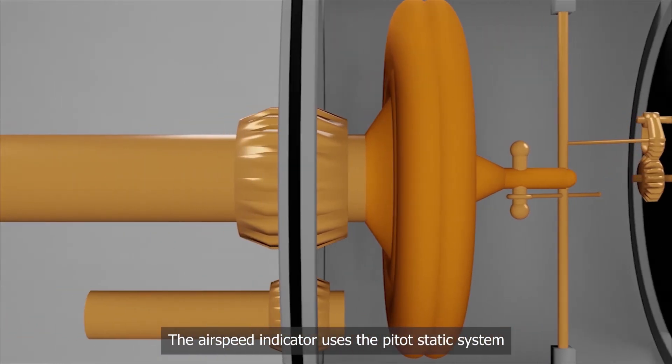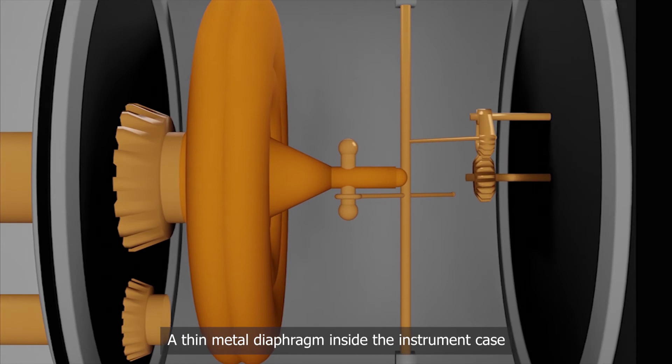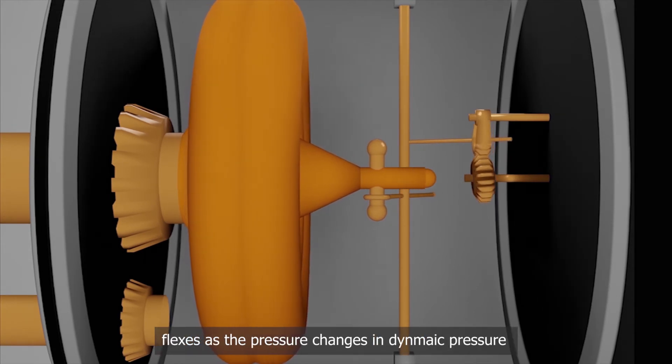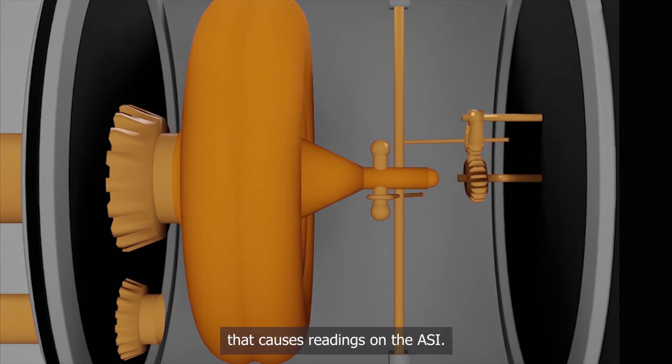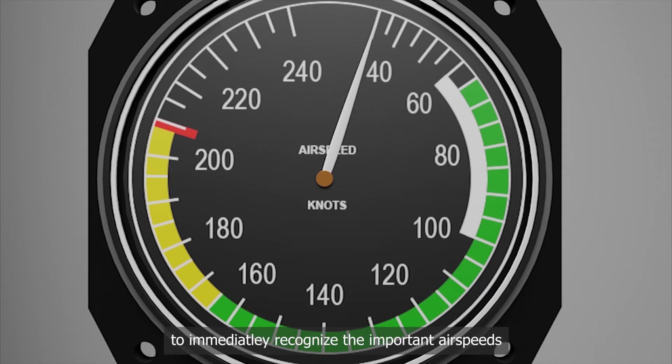The airspeed indicator uses the aircraft's pitot static system to measure and compare the dynamic air pressure between moving air into the pitot tube and static pressure. A thin metal diaphragm inside the instrument case flexes as the pressure changes in dynamic pressure that causes readings on the ASI. The airspeed indicator is color-coded to help the pilot immediately recognize the important airspeeds and the ranges of airspeed.